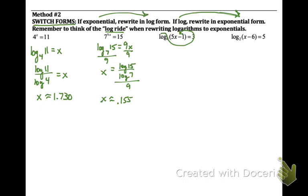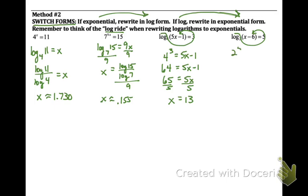Now with a logarithm where we don't have one log equaling another, we can't use the property of equality, so we switch forms using the log ride motion. Example: log base 4 of (5x - 1) = 3, rewritten as 4 cubed equals 5x - 1, so 64 = 5x - 1, giving x = 13. Similarly, log base 2 of (x - 6) = 5 becomes 2 to the fifth power equals x - 6, so x = 38.